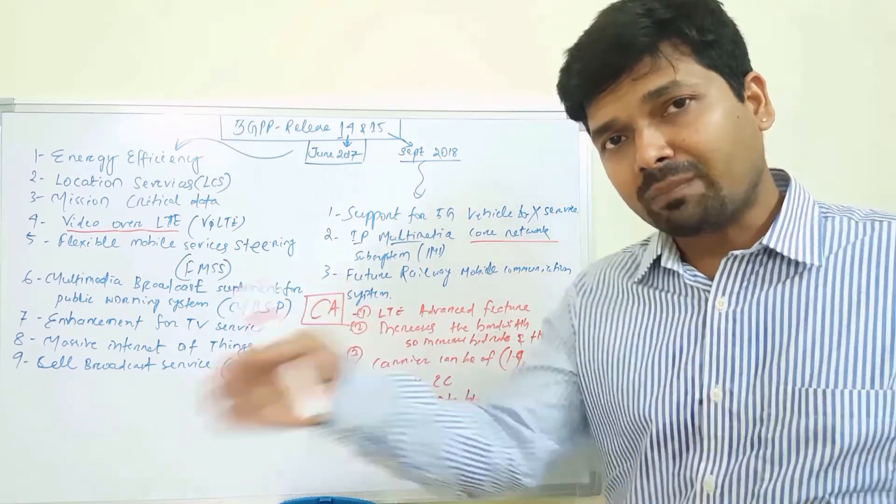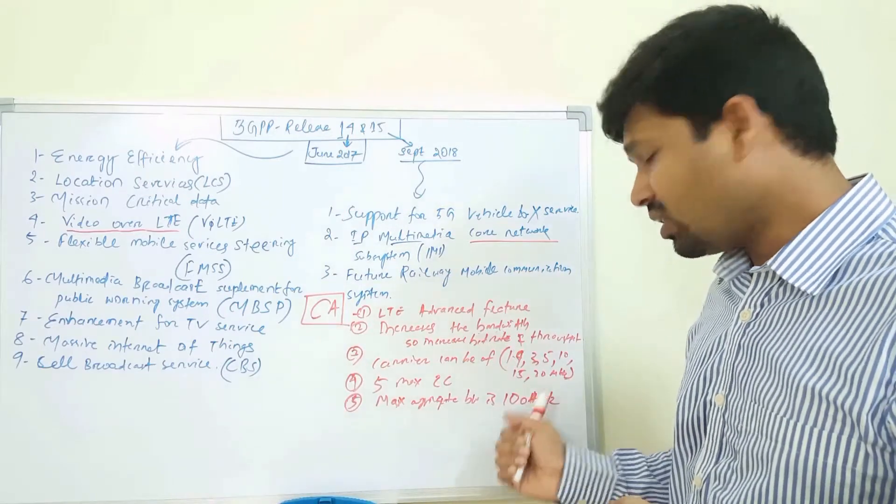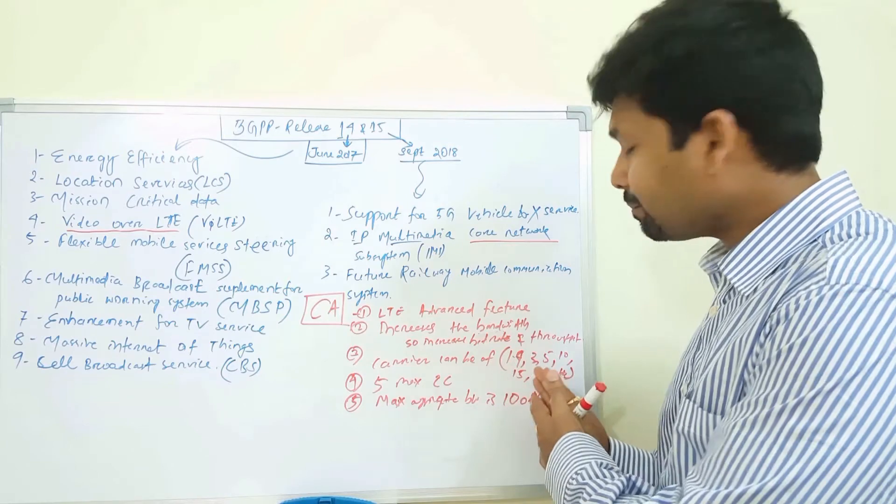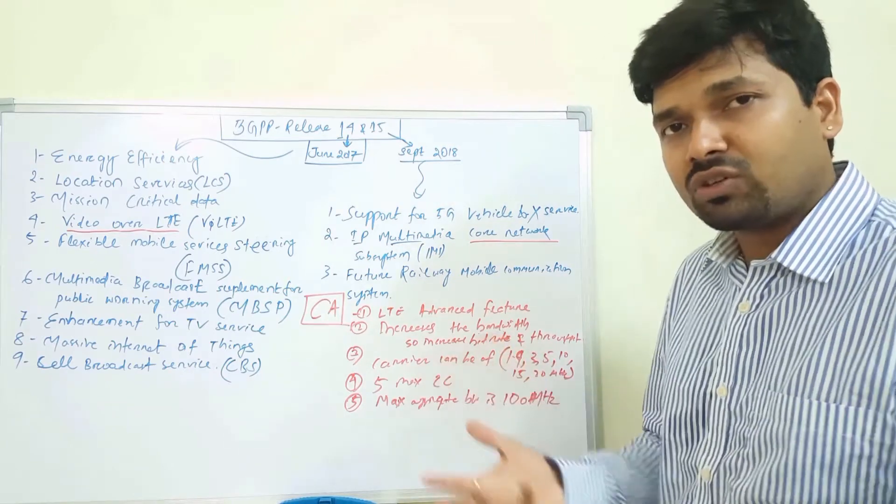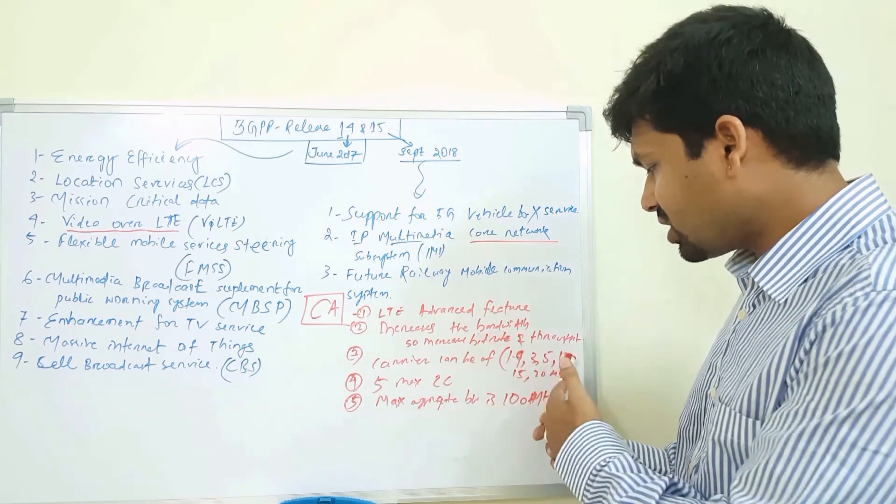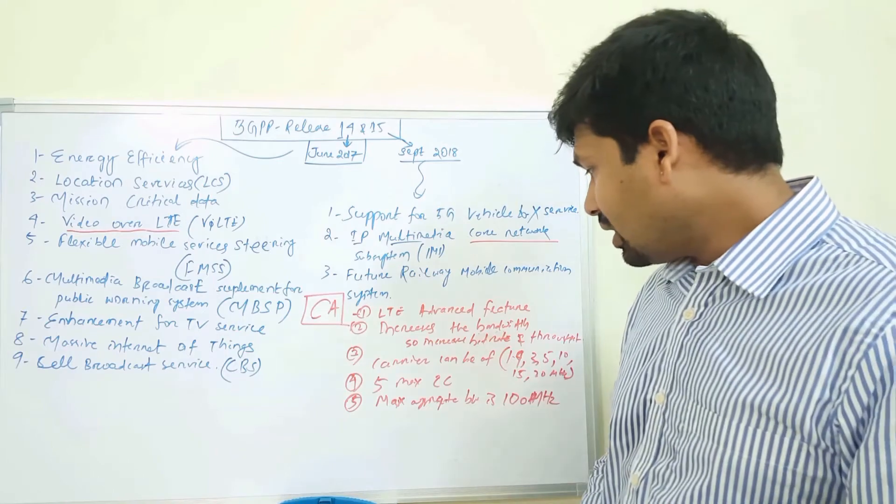If you have 5, 20 megahertz carriers and you combine them through the carrier aggregation feature, you'll be able to achieve 100 megahertz. However, you can use any of the combinations - like if you don't have a 20 megahertz band, you have 1.4 and then you have some 5 or 10, you can combine all three and achieve the maximum throughput and maximum user throughput for the users.